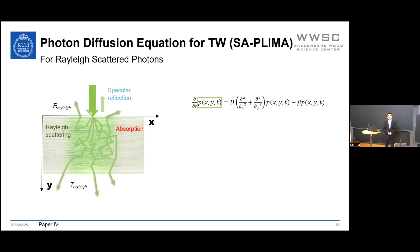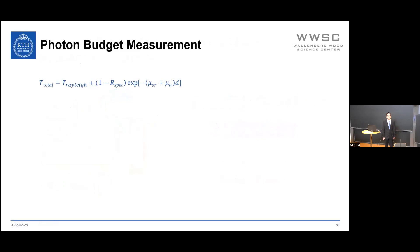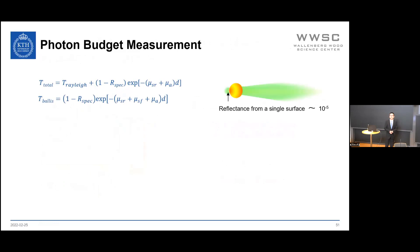In the 2D diffusion equation, p is the probability density of the photon at time t in the coordinate, D is the diffusion coefficient, and β is the absorption rate. After solving p for a distributed light source due to Rayleigh scattering and integrating over x and y, equations for Rayleigh scattered transmittance and Rayleigh scattered reflectance are obtained—both related to the Rayleigh scattering coefficient, absorption coefficient, and sample thickness. From these, the total transmittance is obtained as Rayleigh scattered transmittance plus photons transmitted without Rayleigh scattering and absorption, with ballistic transmittance yielding the extinction coefficient as the sum of all three parameters.